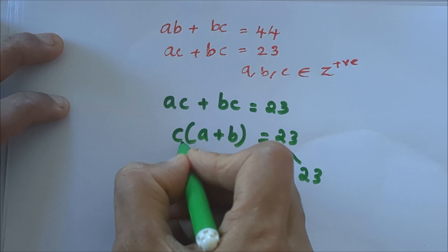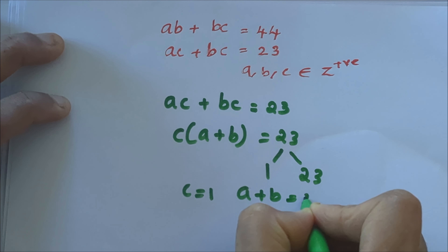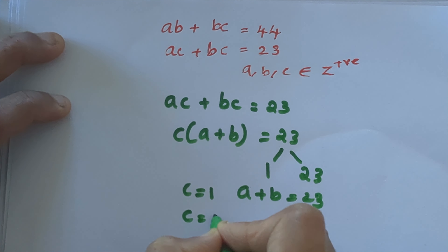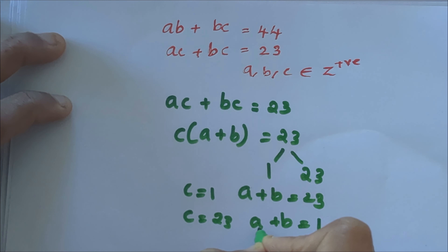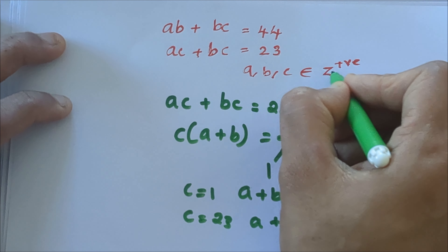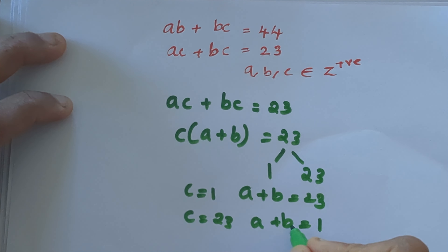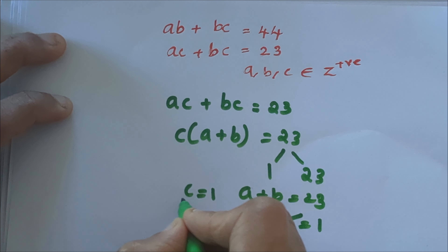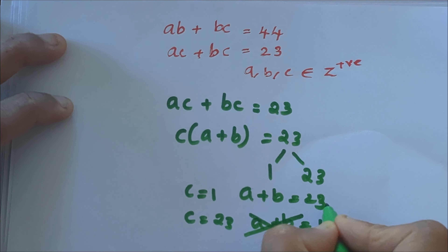That means c is either 1 with a plus b equal to 23, or c equal to 23 with a plus b equal to 1. But a plus b cannot be 1, because a and b are positive integers — the smallest positive integer is 1, so 1 plus 1 equals 2. So that case is not possible. Therefore c equals 1 and a plus b equals 23.